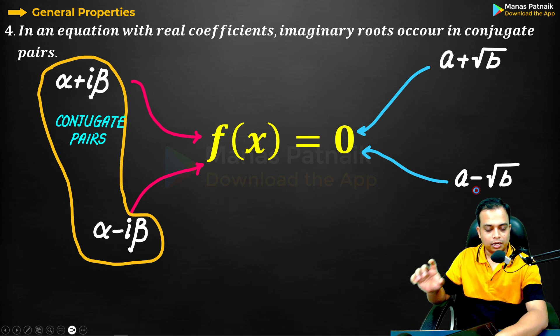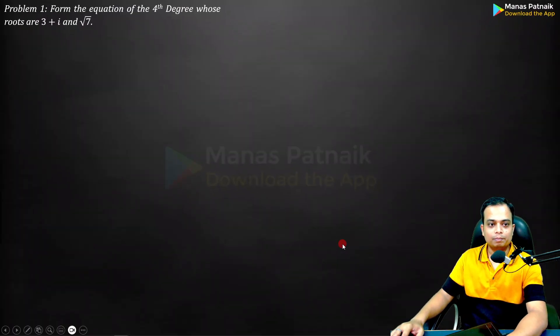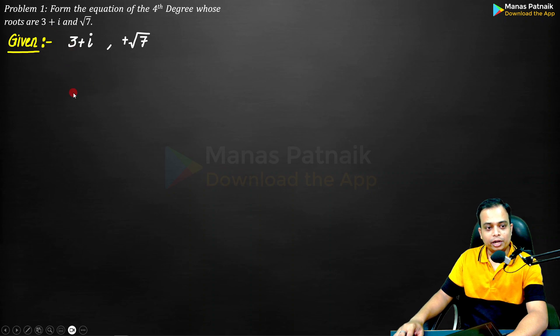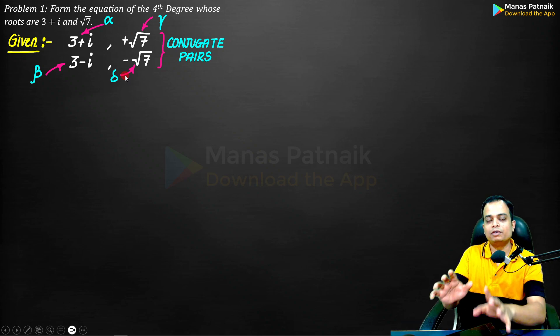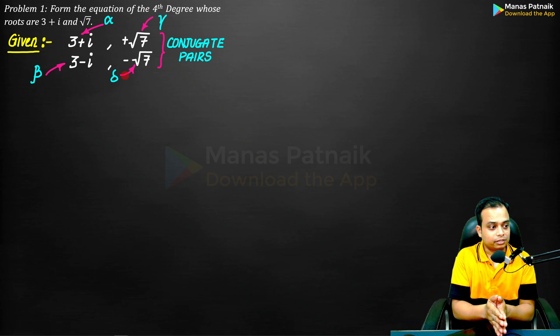Now let's begin the problem. So 3 plus iota and root 7 have been given. We know its conjugate pair is going to be 3 minus iota and negative root 7. Let's call this as alpha, beta, gamma, and delta. There are two approaches which I'll be discussing in today's session.